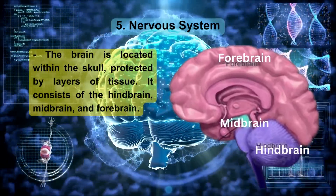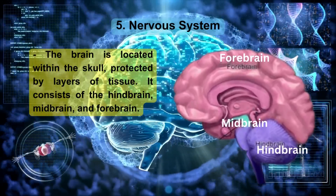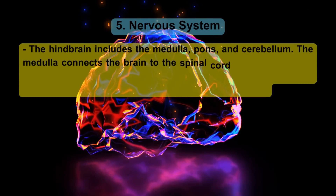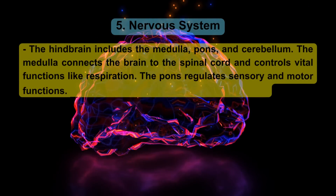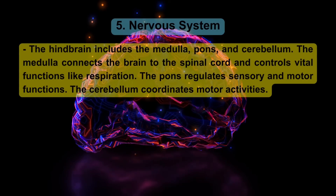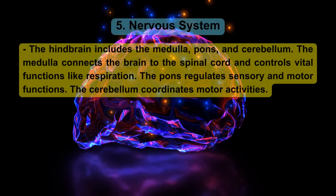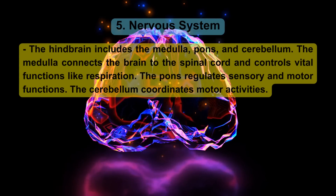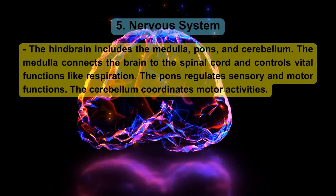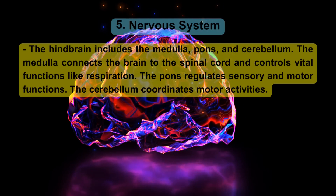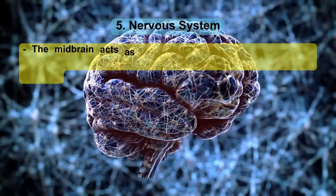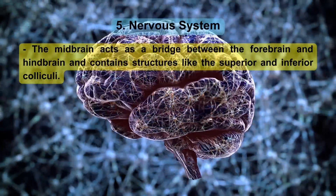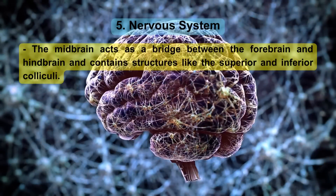The brain consists of the hindbrain, midbrain, and forebrain. The hindbrain includes the medulla, pons, and cerebellum. The medulla connects the brain to the spinal cord and controls vital functions like respiration. The pons regulates sensory and motor functions. The cerebellum coordinates motor activities. The midbrain acts as a bridge between the forebrain and hindbrain and contains structures like the superior and inferior colliculi.